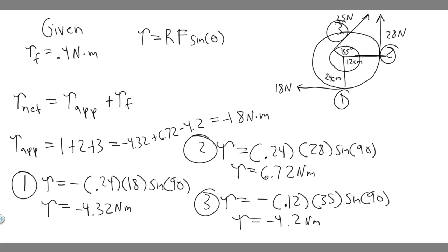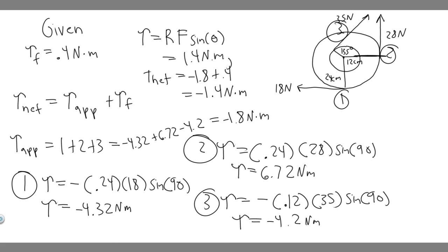Now we add the friction torque. Since the applied torque is clockwise (negative), the friction torque opposes it, so we add +0.4: −1.8 + 0.4 = −1.4 Nm. The net torque is 1.4 Nm clockwise. You can write it as −1.4 Nm or as 1.4 Nm clockwise, depending on what your teacher requires.